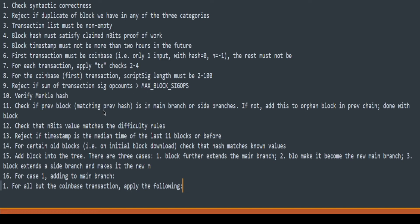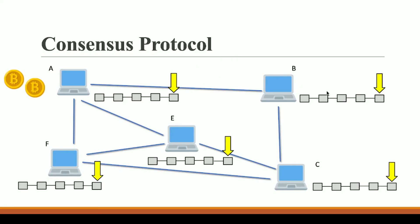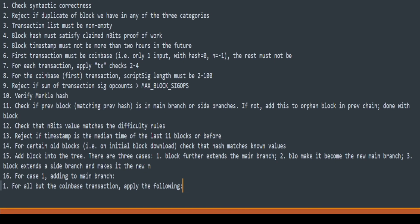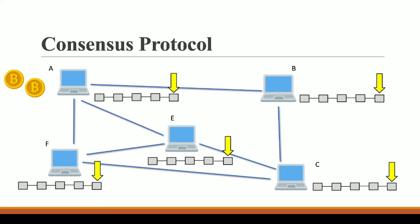There are also other checks which will run in order to verify that the block being created by A is correct or not. Once this is done, only then will this block be added to other nodes of the blockchain, and only then will A be rewarded with cryptocurrency. If the proof of work protocol finds out that the block added by A is not a correct block, A will not be rewarded and will be at a loss — because A has consumed a huge amount of energy and will have to pay a huge electricity bill.